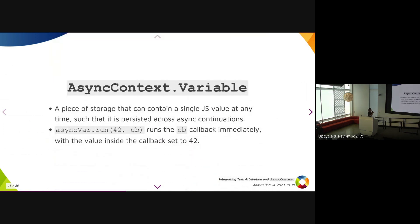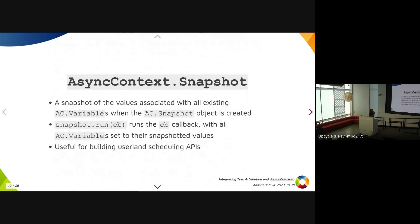So as I mentioned, AsyncContext.Variable is a piece of storage, like the actual JavaScript object has a piece of storage that contains a single JavaScript value at any time, but it's preserved across async continuations. You have the run method, which takes a value and a callback. It runs the callback immediately setting the value to 42 inside the context of that callback.